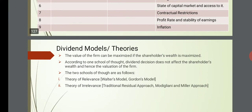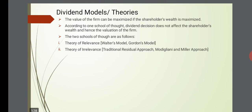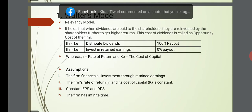The value of the firm can be maximized if shareholders' wealth is maximized. Two schools of thought exist: the theory of relevance, which says dividend decisions do affect shareholders' wealth and hence firm valuation — represented by Walter's model and Gordon's model — and the theory of irrelevance, which says they do not — represented by the traditional residual approach and the Modigliani-Miller approach.